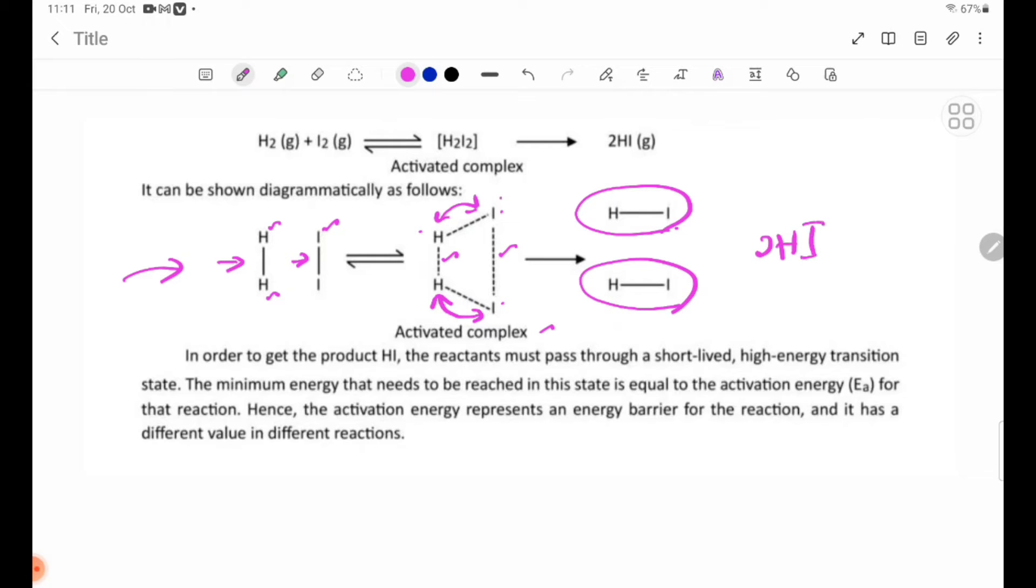In order to get the product HI, the reactants must pass through a short-lived, high-energy transition state. The minimum energy that needs to be reached in this state is equal to the activation energy Ea for that reaction.